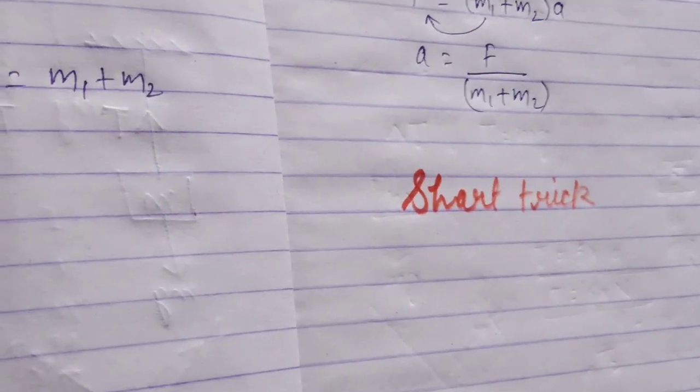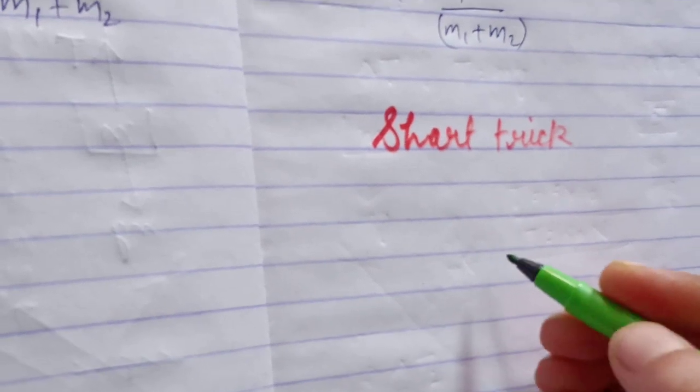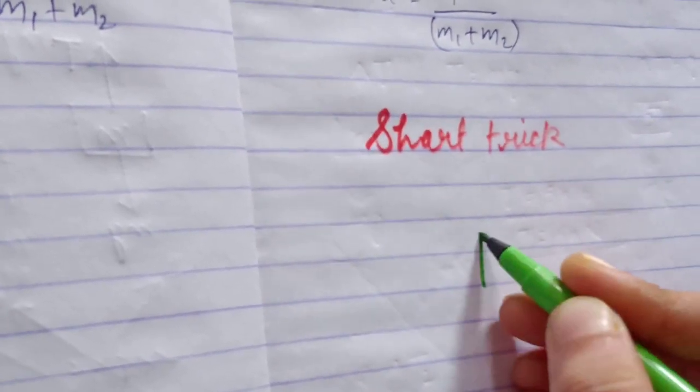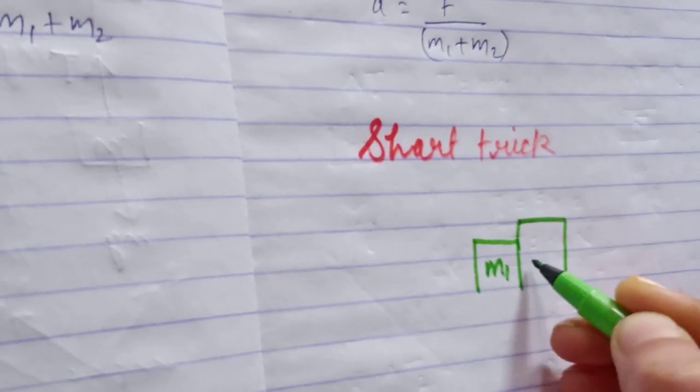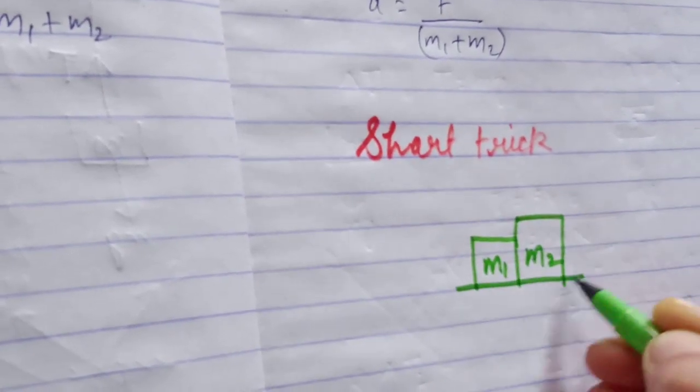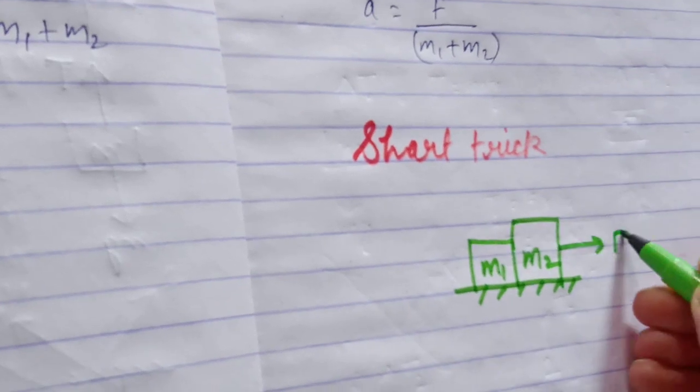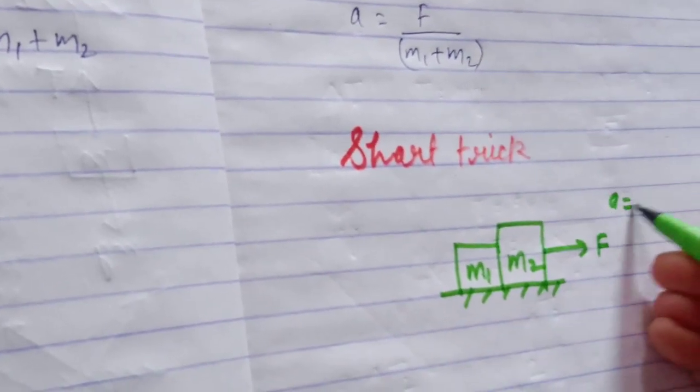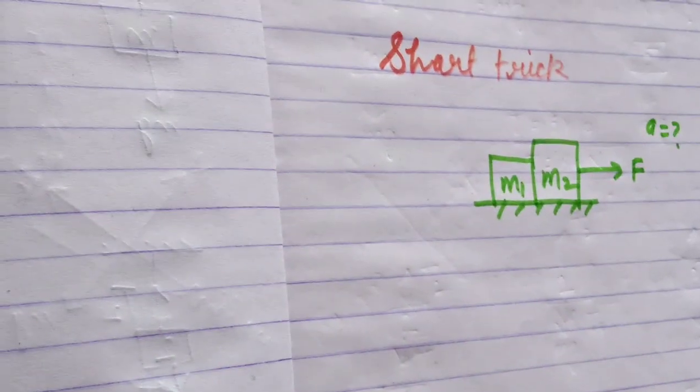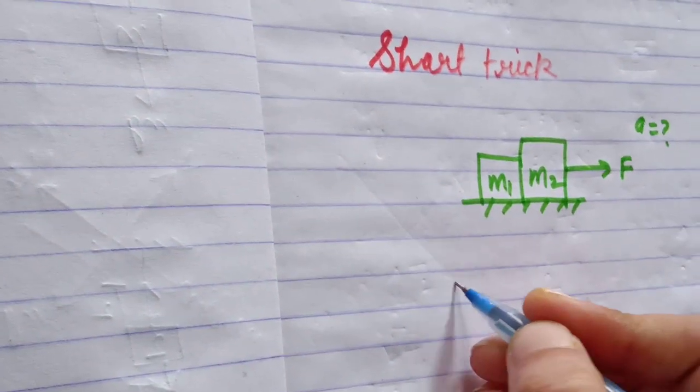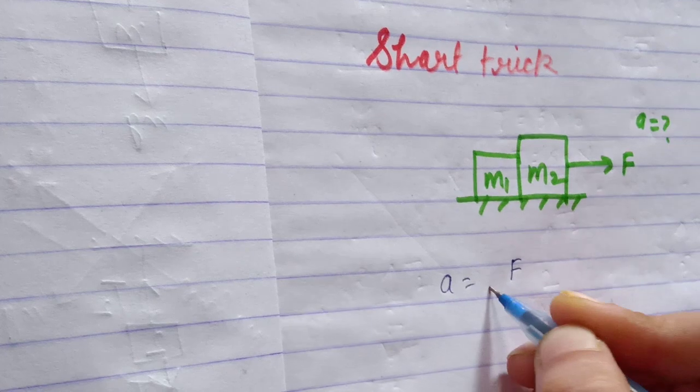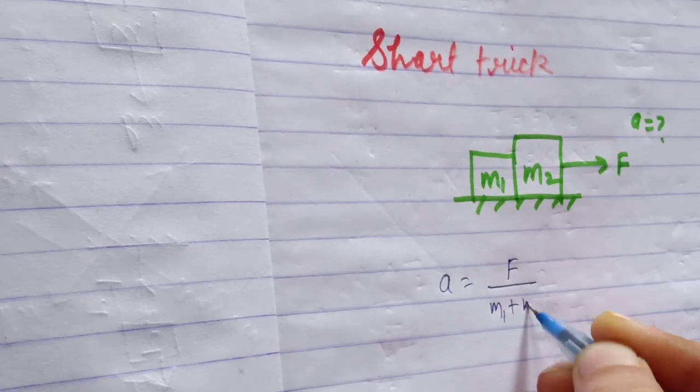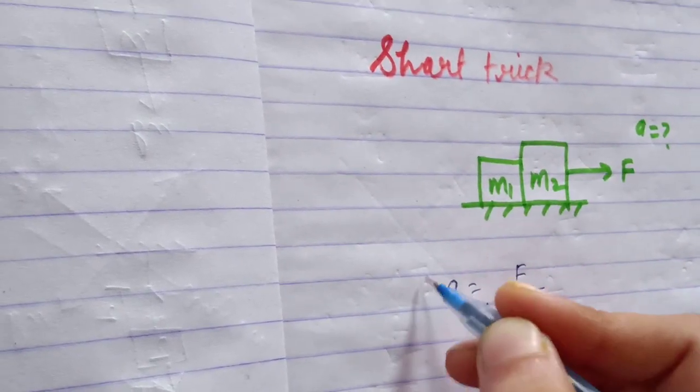First assume the string mass is negligible and the blocks are treated as one block. The force is F, then what is the acceleration? a equals F divided by (m1 plus m2). This